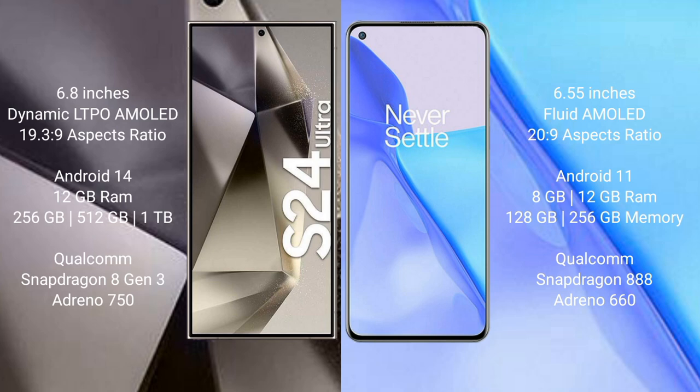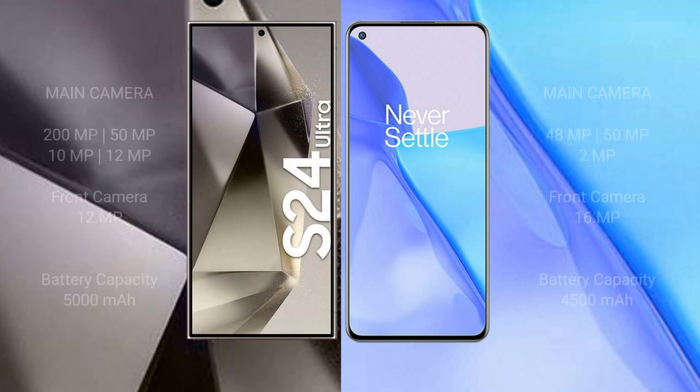OnePlus 9 runs on Android 11. Samsung Galaxy S24 Ultra comes with 12GB RAM and 256GB, 512GB, or 1TB internal storage, Qualcomm Snapdragon 8 Gen 3 processor, and Adreno 750 GPU. OnePlus 9 comes with 8GB or 12GB RAM and 128GB or 256GB internal storage, Qualcomm Snapdragon 888 processor, and Adreno 660 GPU.